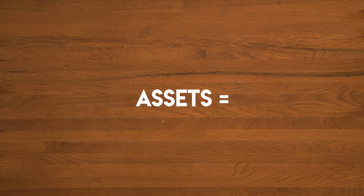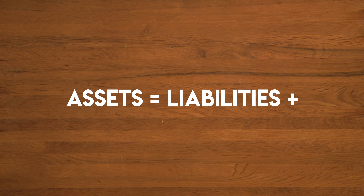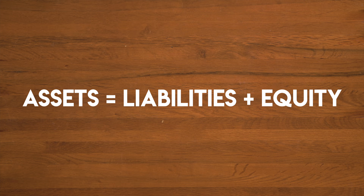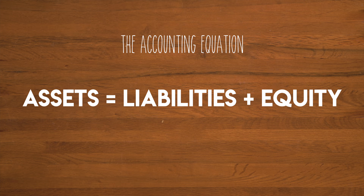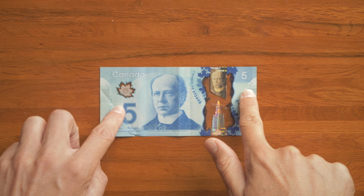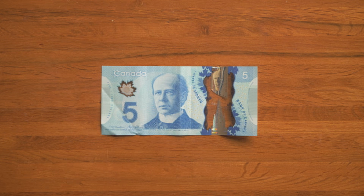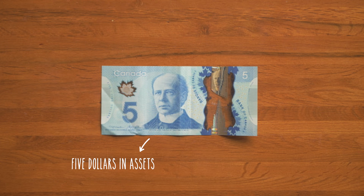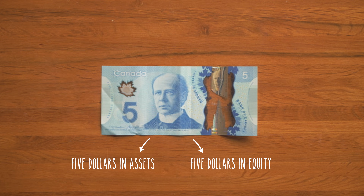We use liabilities to describe what the business owes to third parties and we use equity to describe what the business owes to its owner — in this case, me. So assets equal liabilities plus equity. There we have it, the full accounting equation. So that $5 that my popcorn business now has is called an asset, and that $5 that my business owes back to me is called equity. See, it balances.